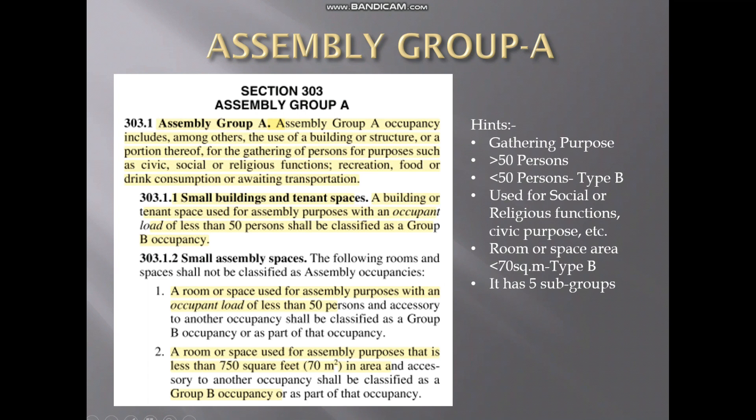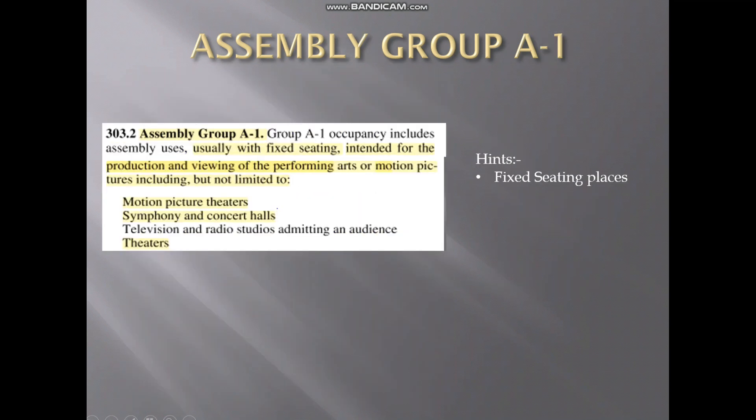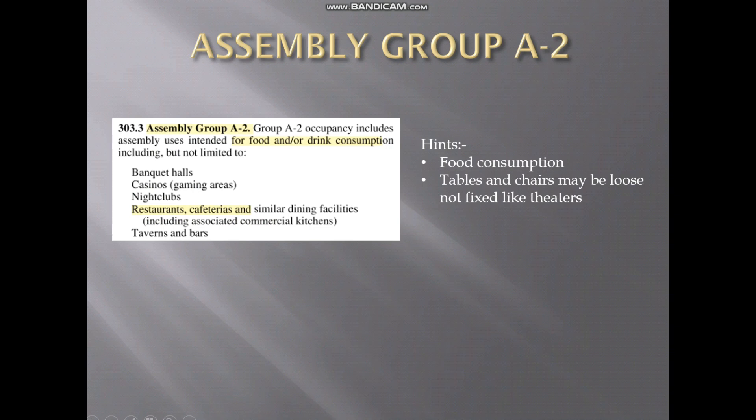Assembly Group A has five subgroups. Assembly Group A1 is for fixed seating intended for the production and viewing of performing arts — mainly fixed seating places like theatres where you can view performing arts or films, including motion pictures.